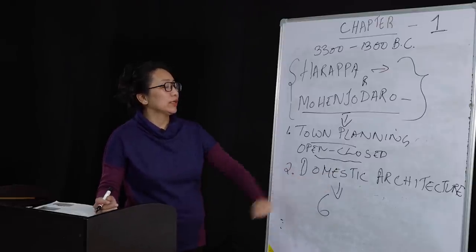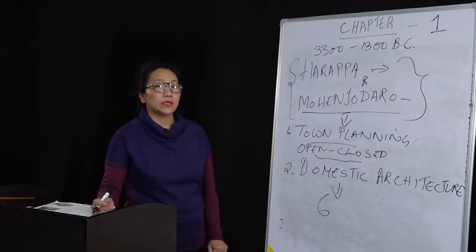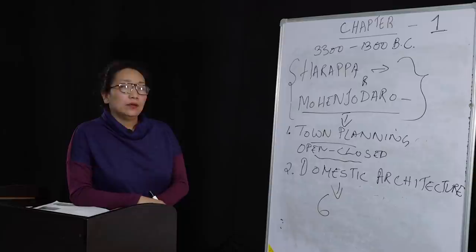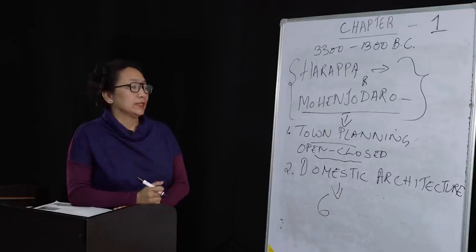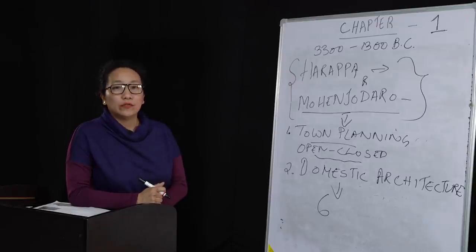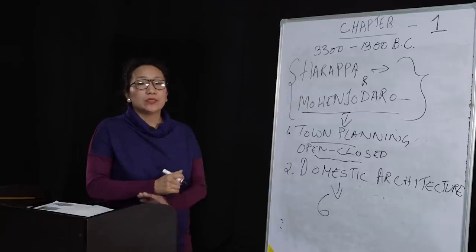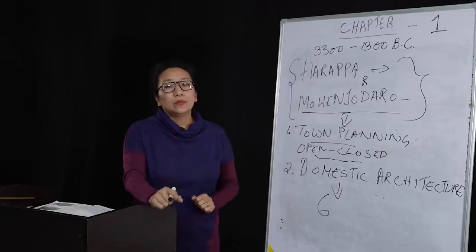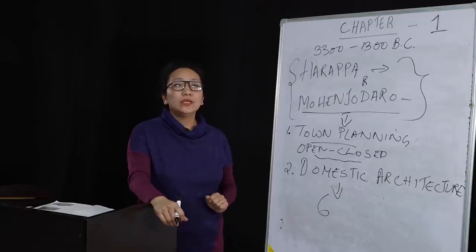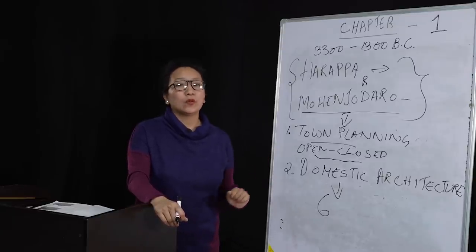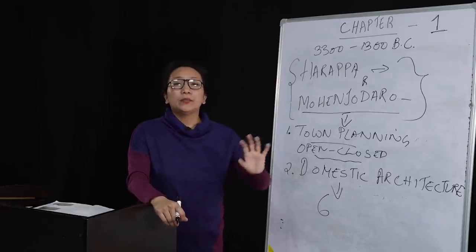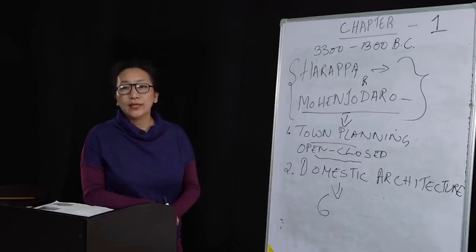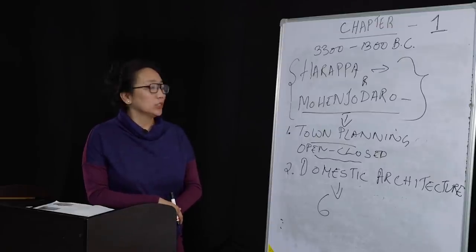The second feature of domestic architecture is the great granary at Harappa. The great granary was like a godown or storehouse of grains kept by city officials. It was not ordinary in size — it had two big blocks divided by around 23 feet in between. The blocks were further divided into compartments and small chambers, each storing a particular type of food item.